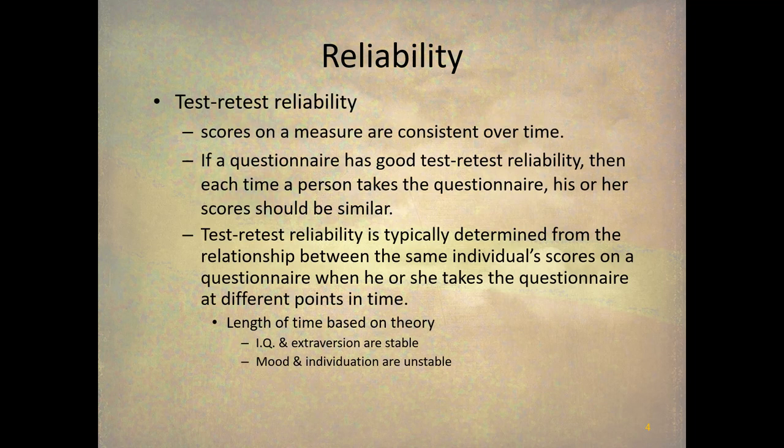So let's get some data about reliability. And one of the best ways to do that, the easiest to explain is test-retest reliability. And the idea is that we expect on a reliable test that scores should be consistent over time. That is, if I stand on the scale and then hop off the scale and a minute later stand on the scale again, it should give me the same measure because I haven't lost weight or gained weight in a minute. And that's what test-retest reliability is. If a questionnaire has good test-retest reliability, that each time I take the questionnaire, my score should be similar.